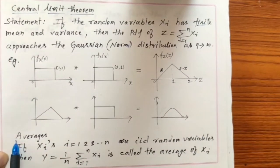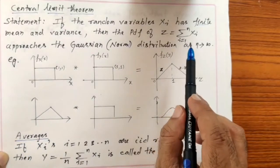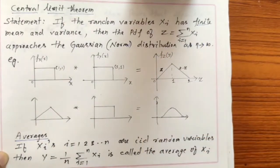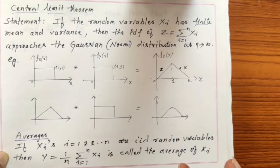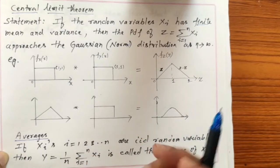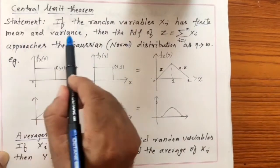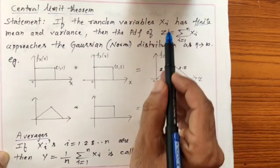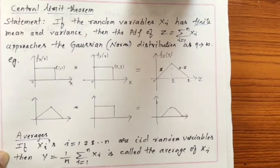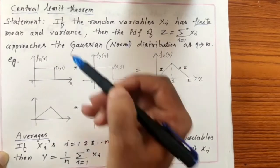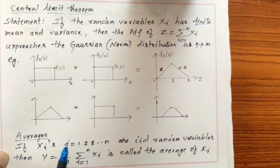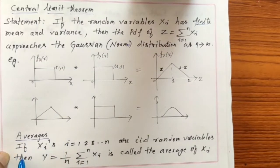We will consider the average of the random variables. We have seen that if you take the sum of IIDs, the mean is n times the mean of X, so as n gets large, the mean gets large. Similarly, the variance also gets large. But we want the mean and variance to be finite. To achieve this, we should take the average of those random variables so that we can apply the Central Limit Theorem.